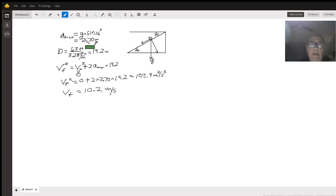That calculates out to be 2.70 meters per second squared. Now the distance, we'll want to change to meters, so we take the 63 feet, divide that by 3.28 feet per meter, turns out to be 19.2 meters, which is the distance down the slide.